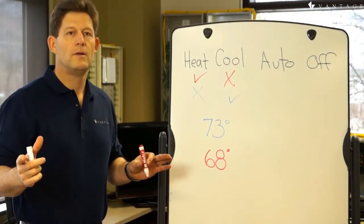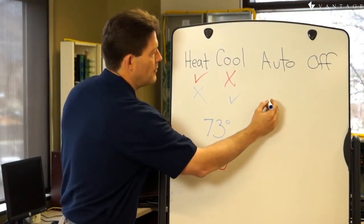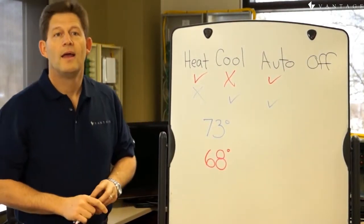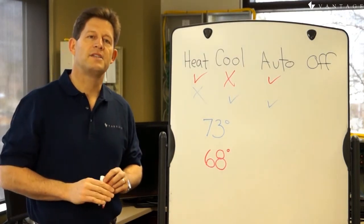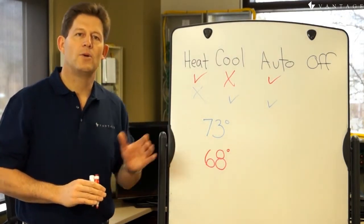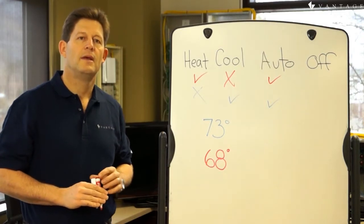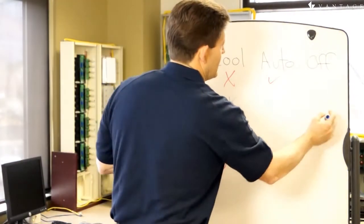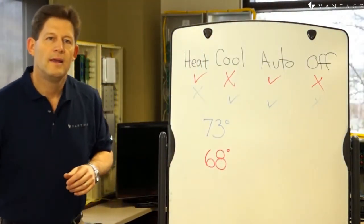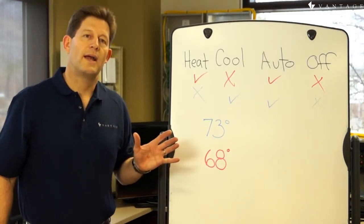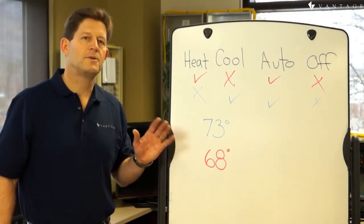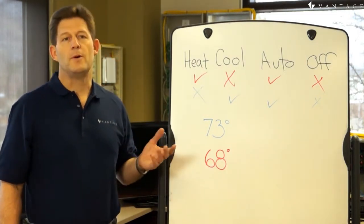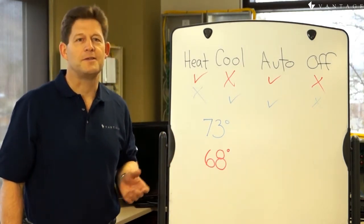In the auto mode, we have the ability to call for heat or cool depending on the set points for heating and cooling when those temperatures are reached. When the operation mode is off, the thermostat can neither call for heat nor cool, no matter how hot or cold it may get. We don't usually turn the operation mode to off for normal operation because it's like having no system at all. That would be the most energy-efficient mode, but it doesn't do anything for our comfort.